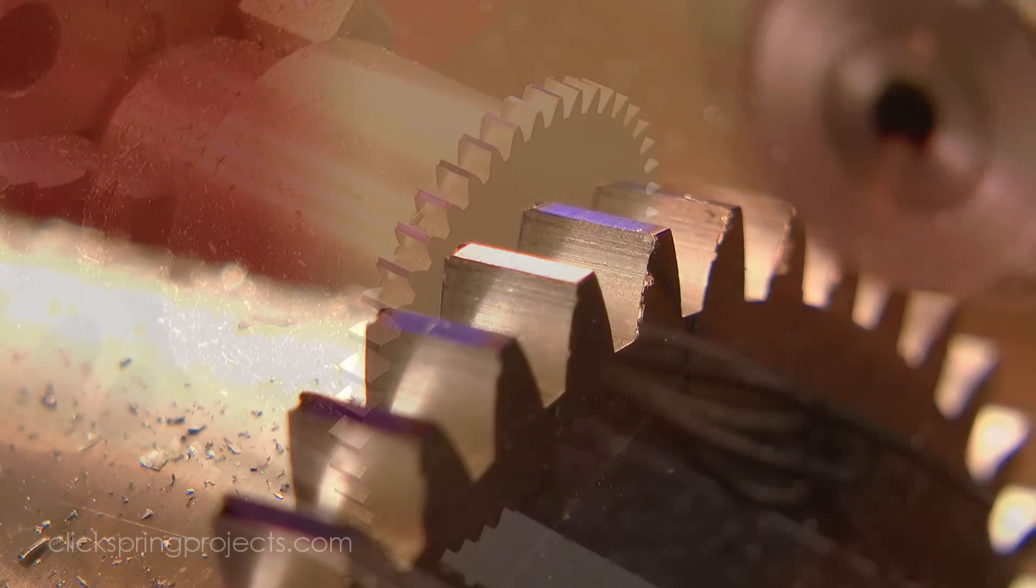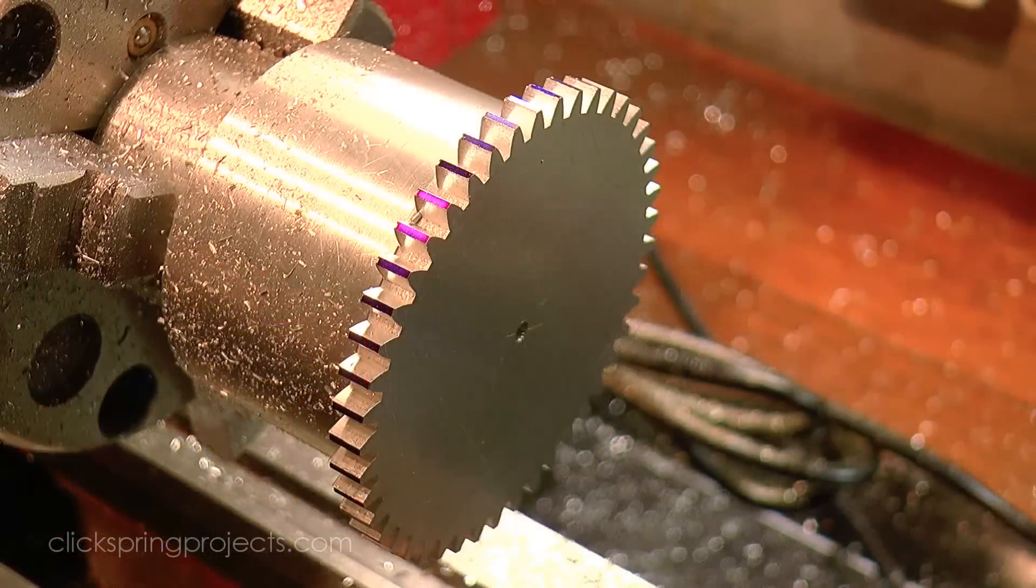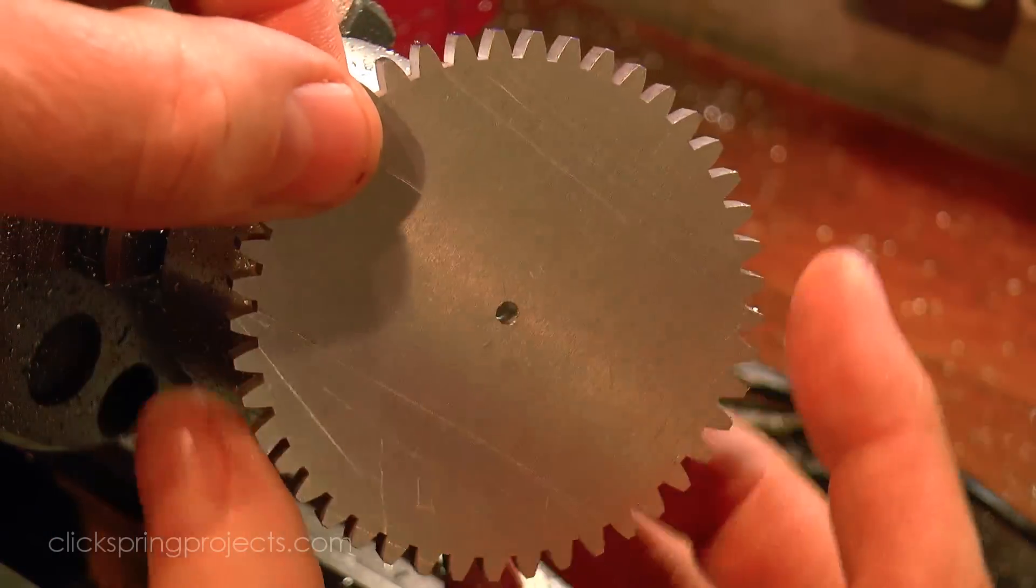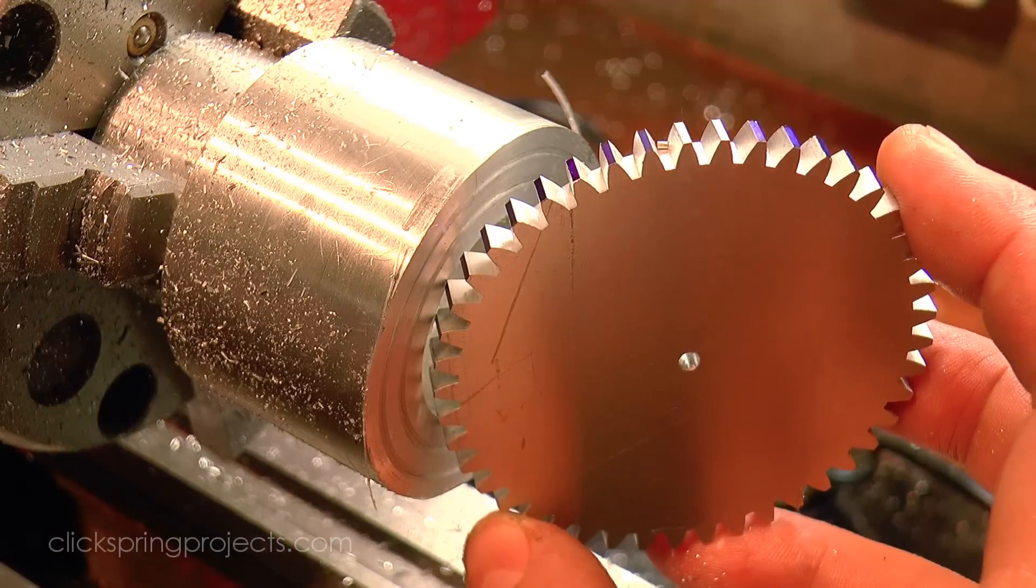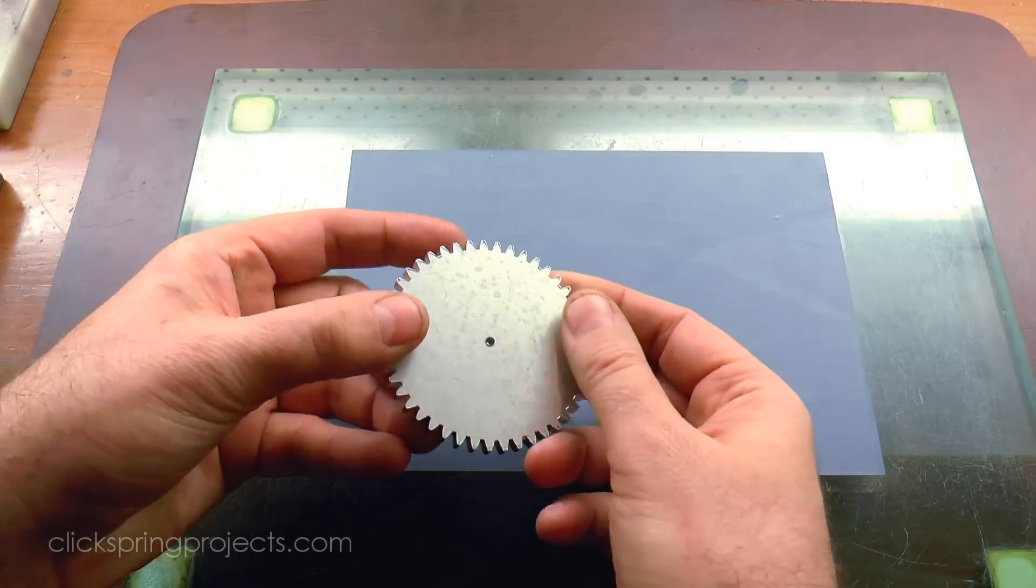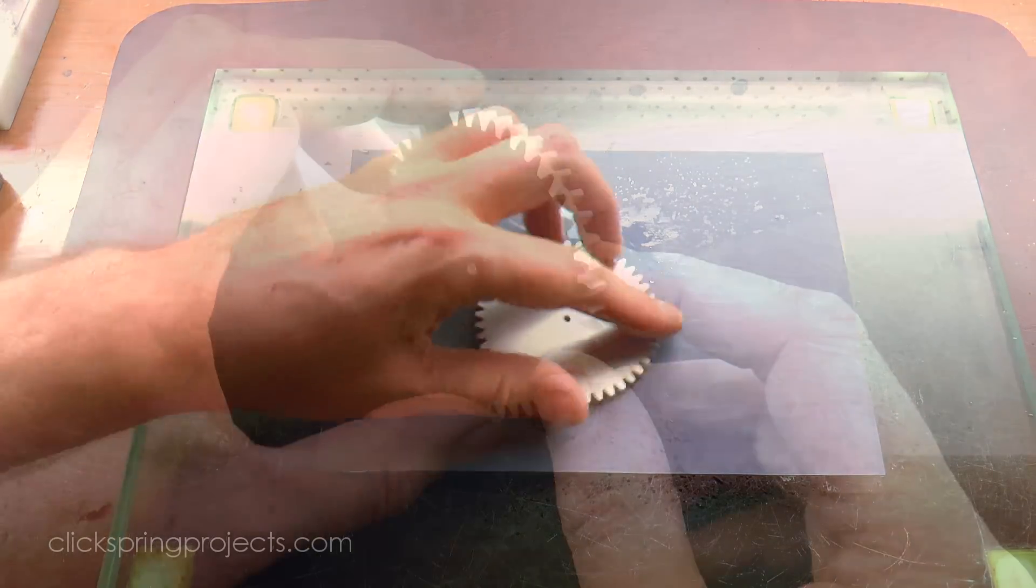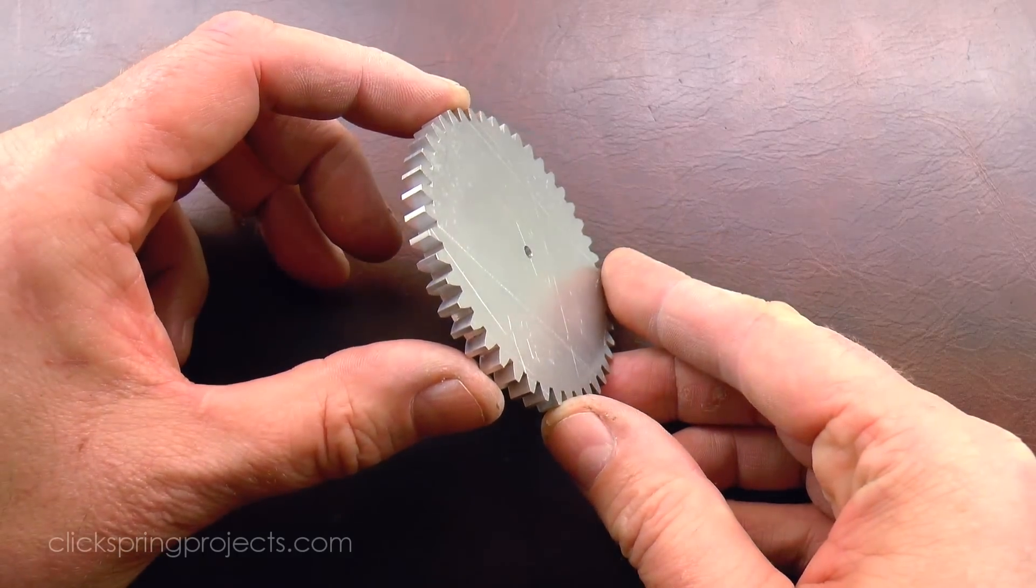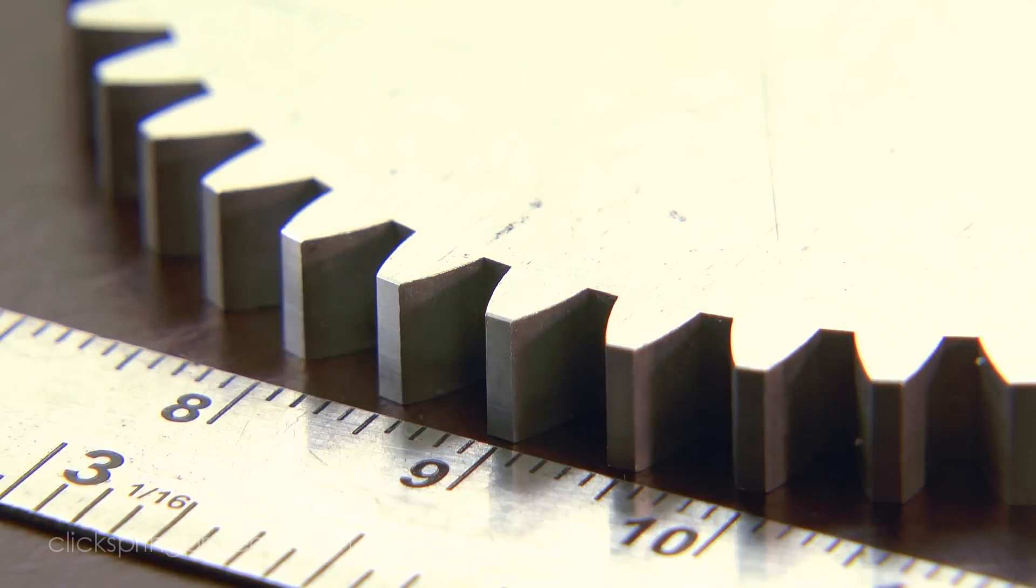So as with a small module, something much larger, like for example a replacement lathe change gear, is also well within the capability of the same set of tools. It does require care to manage things as all of this starts to get larger, like for example the touch off against the work, but the basic process and the core tools remain the same, putting both ends of the gear cutting scale in reach as required.